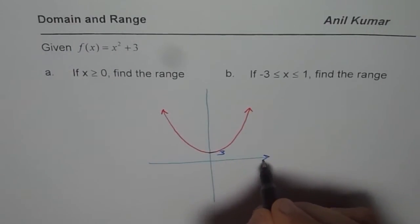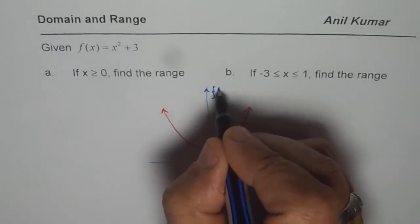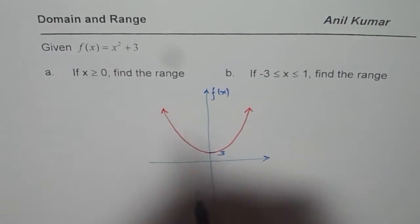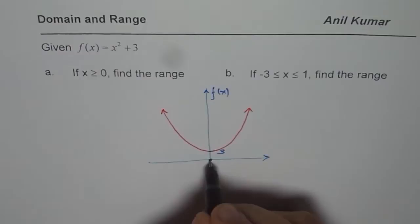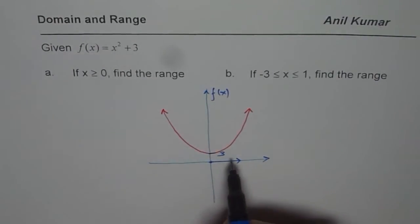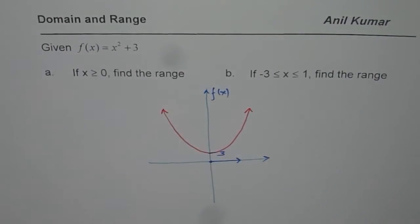Now, the first part of the function is that if x is greater than or equal to 0, that means the value of x is on the right side. In that case, we have to find the range.